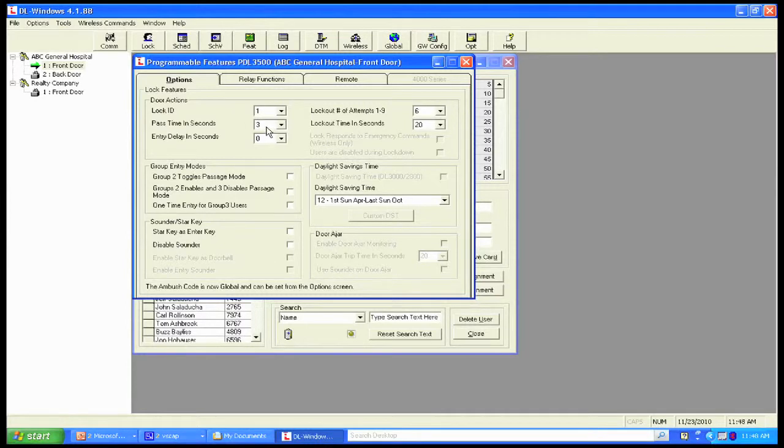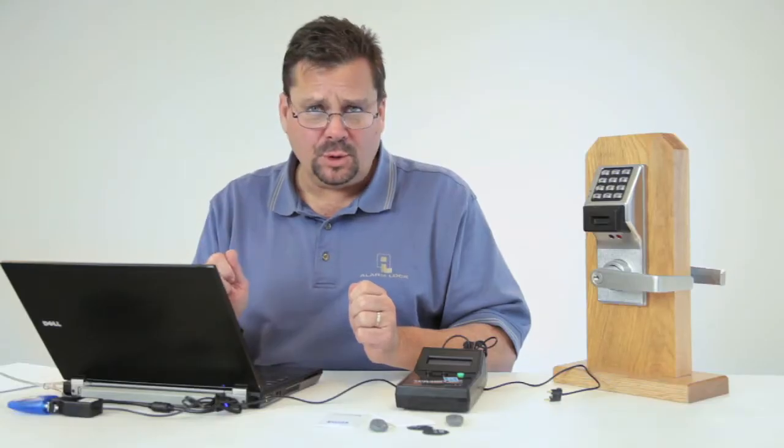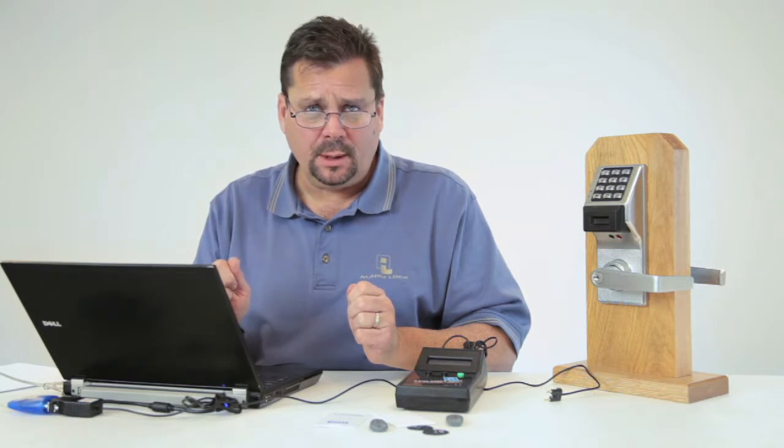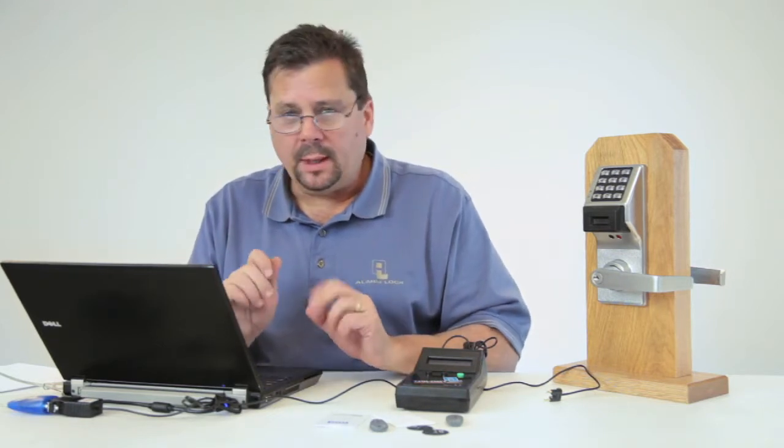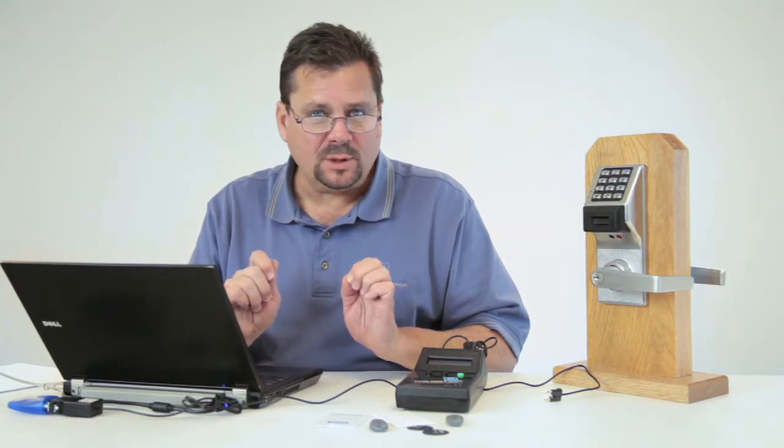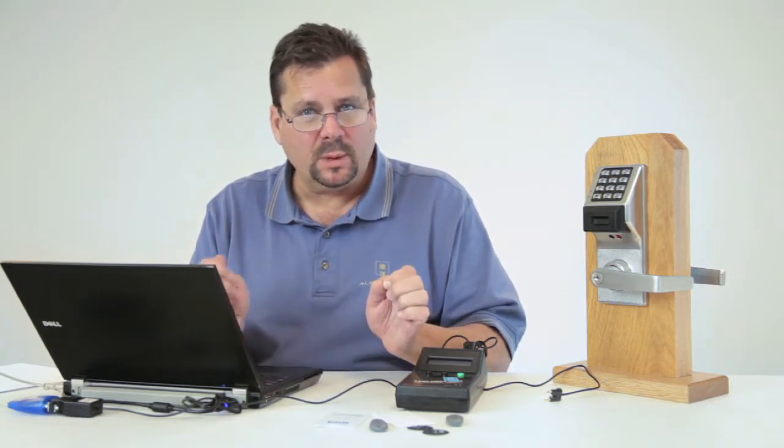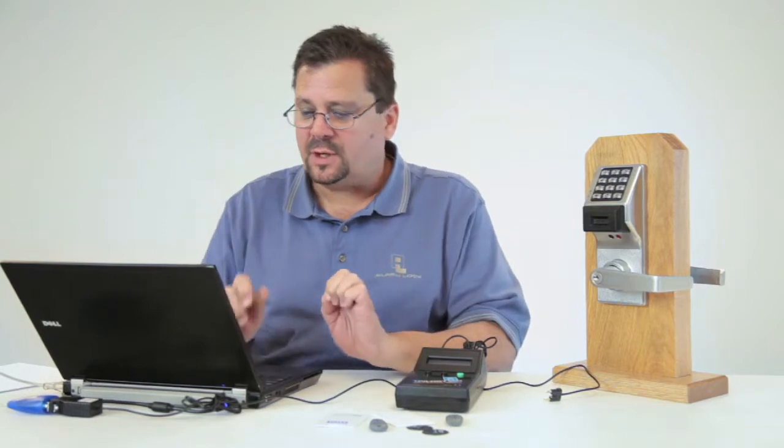From here, the lock ID, the pass time simply means that the lock's going to be unlocked for three seconds. I can perform certain types of functions. Maybe I want to have group two toggle passage mode, which means I'm going to set it up as a classroom lock. Group two user enters code or card, lock unlocks. Presents it again, it relocks. Or we want group two to unlock the door, but someone else to relock it.